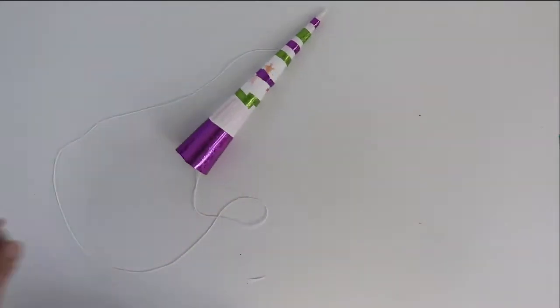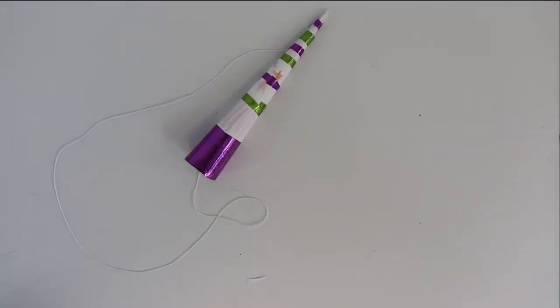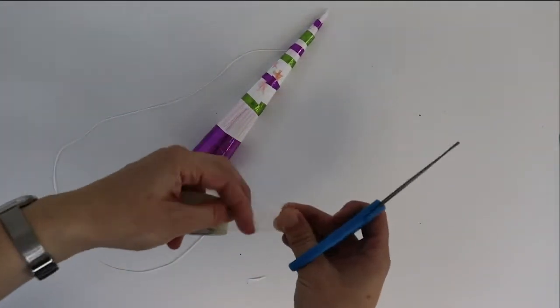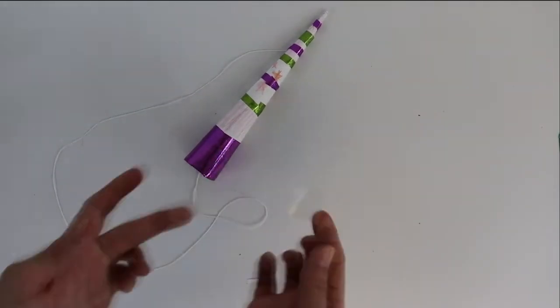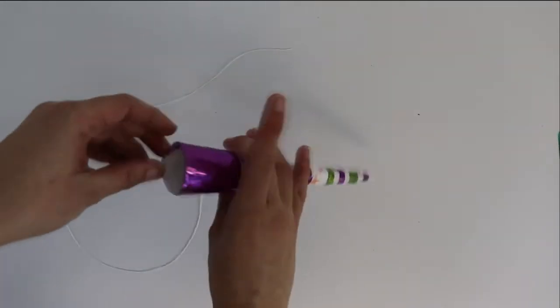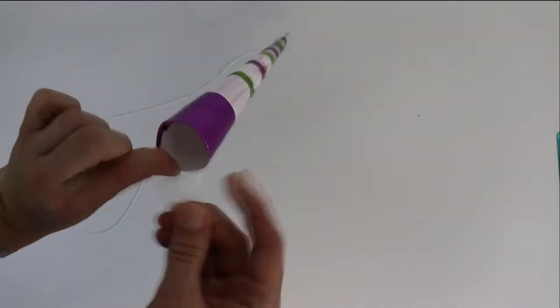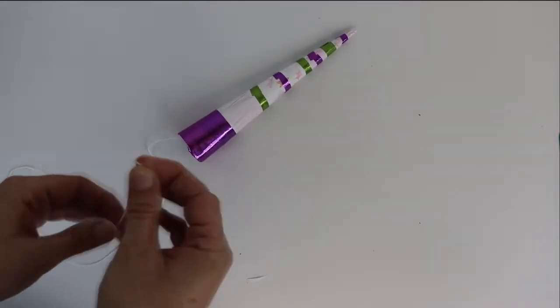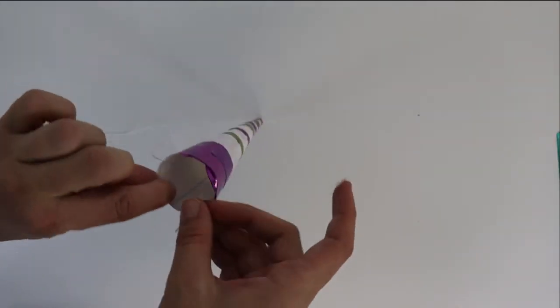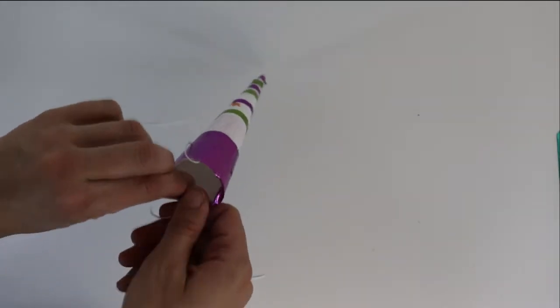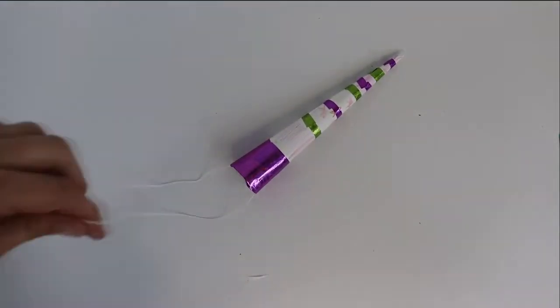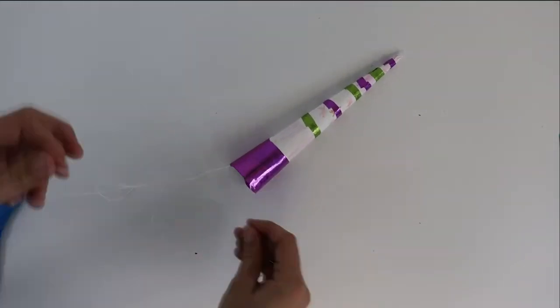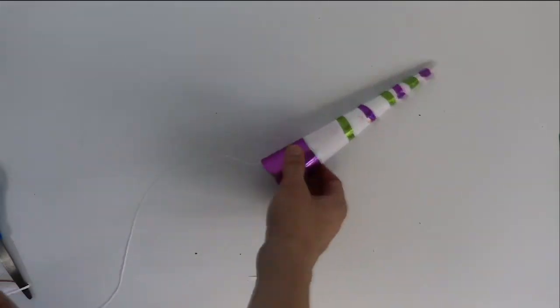Use tape or glue to fasten the elastic or string to the opening of the cone. If you have string, make sure to cut it in half so that you can tie the unicorn horn around your head. If it's elastic, you can keep it one length to wrap it around.